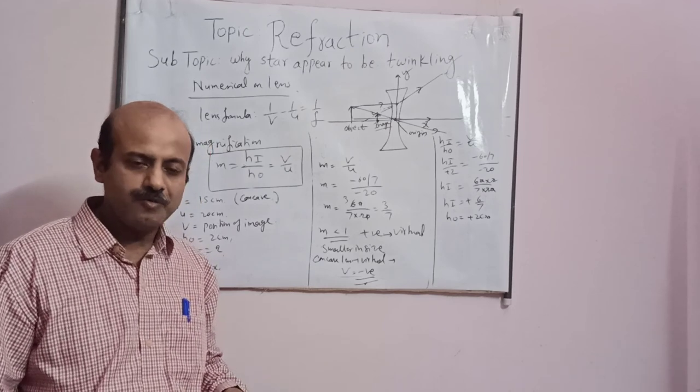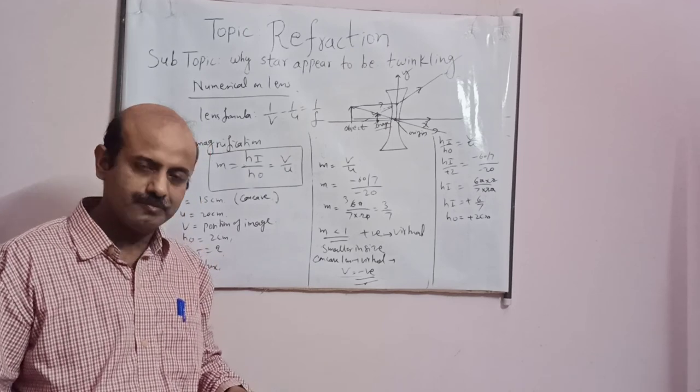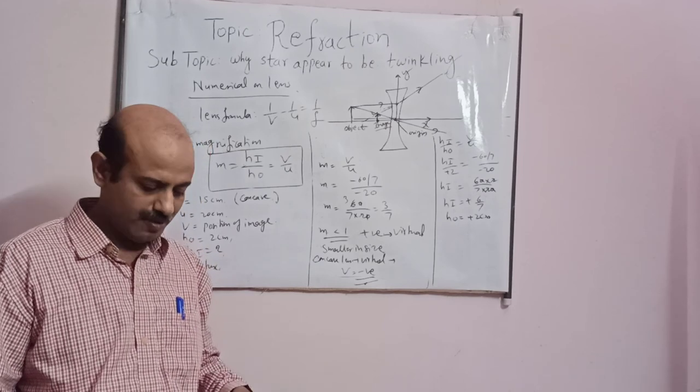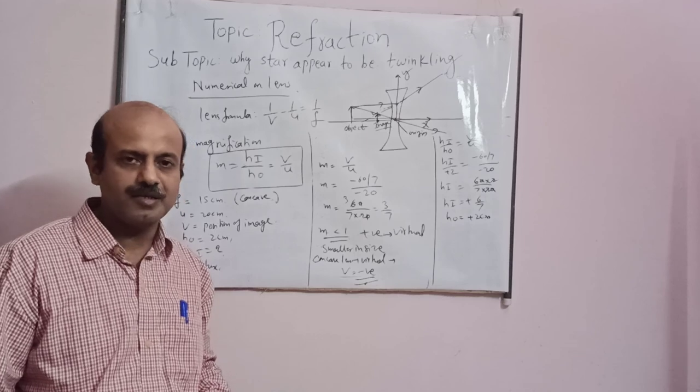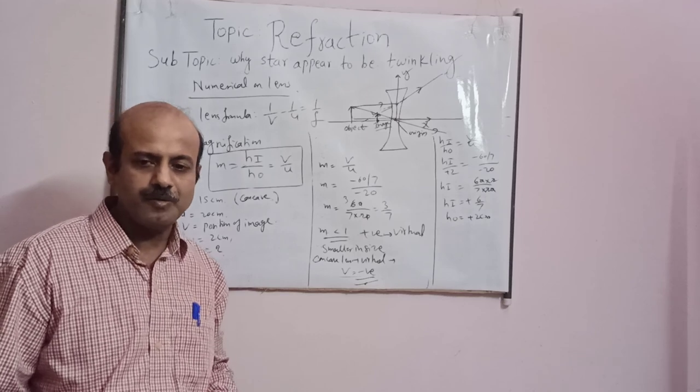Let's once again revise it: take the optical center as the origin, draw the positive x-axis and y-axis. Object on the left means minus sign for u; image on the right means plus sign for v. Height above the principal axis is positive. Use the lens formula and magnification formula with proper sign convention. We will continue with the next topic in the next class. Thank you.